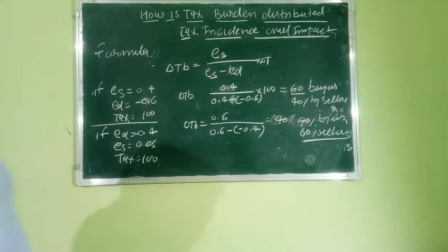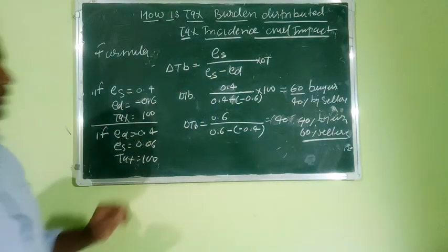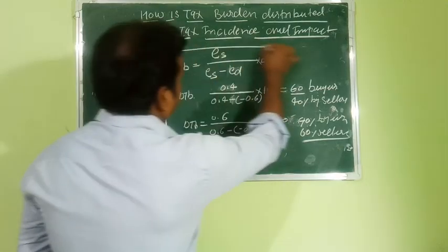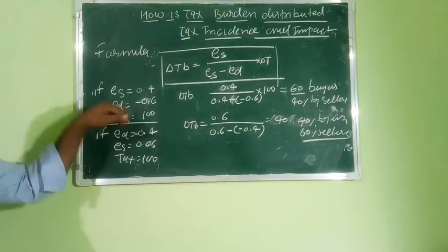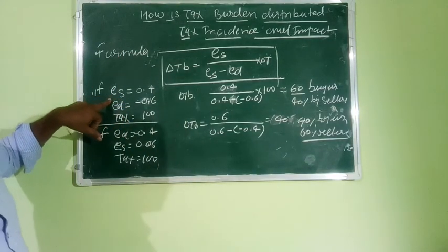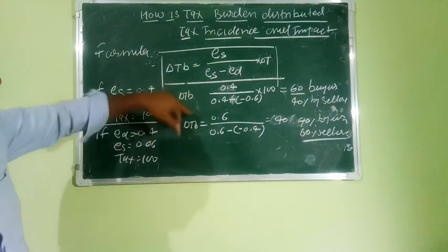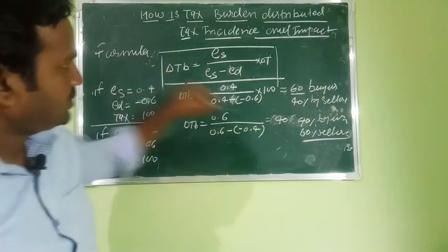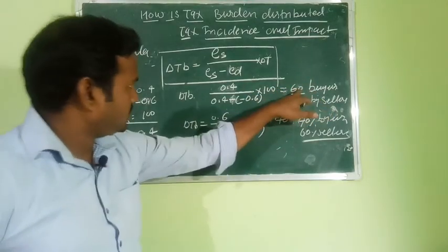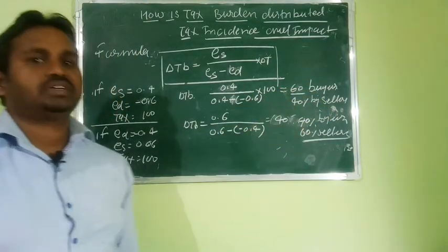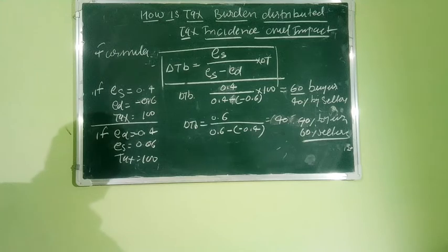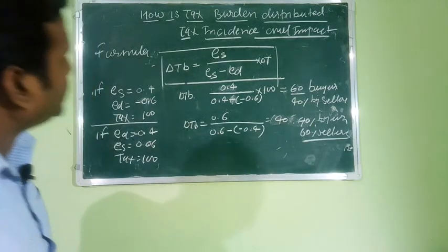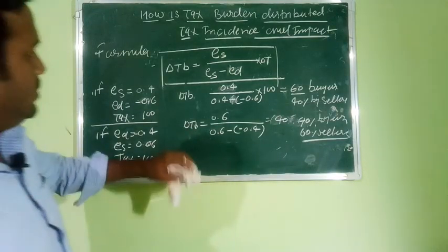Our conclusion is that the tax burden depends upon elasticity of demand and elasticity of supply. If elasticity of supply is less than elasticity of demand, then the maximum burden — maximum tax — is paid by the buyer, and less by the seller. If elasticity of demand is less than elasticity of supply, then the maximum share is paid by the seller and a lower payment by the buyer.